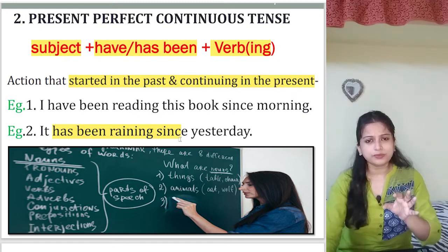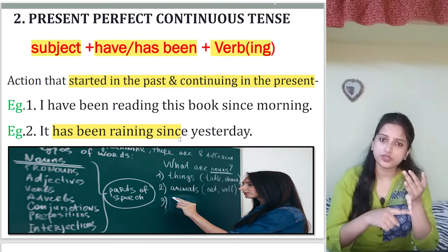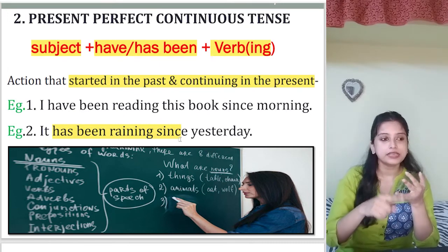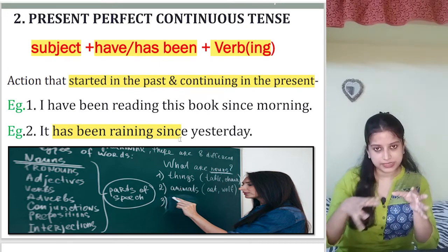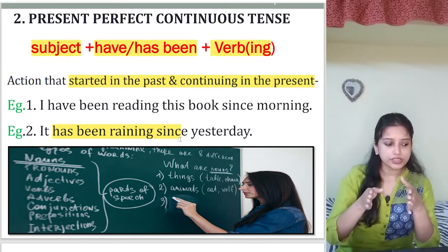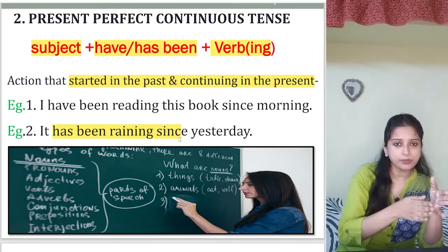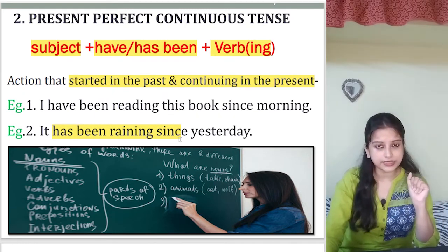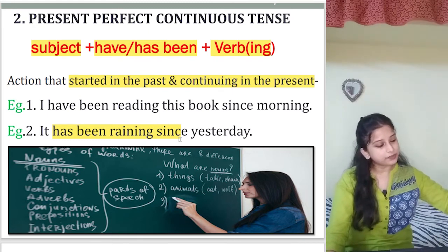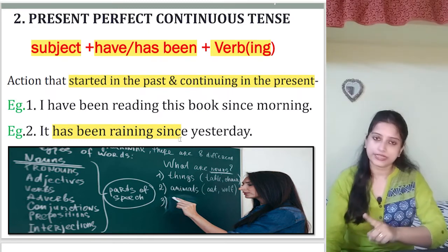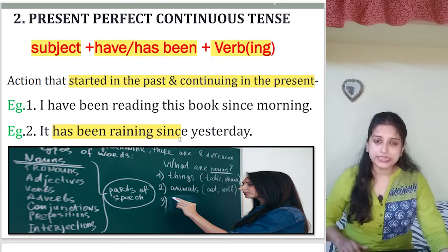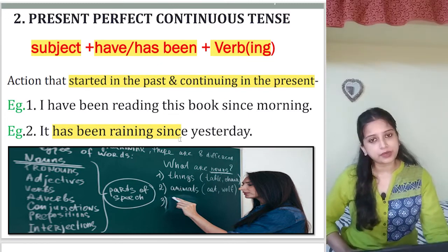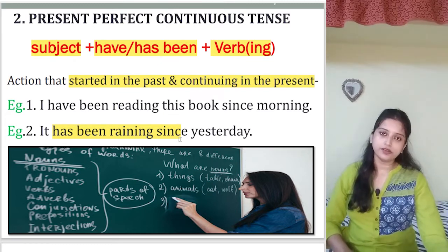So, to summarize: simple present is for habitual truths or facts; present continuous is for something happening right now that I am still doing; present perfect is for something I have just completed in the past or whose effect is continuing; and present perfect continuous is for something I started in the past and am still doing in the present. I hope these four are clear. You can write them down in your notebook.